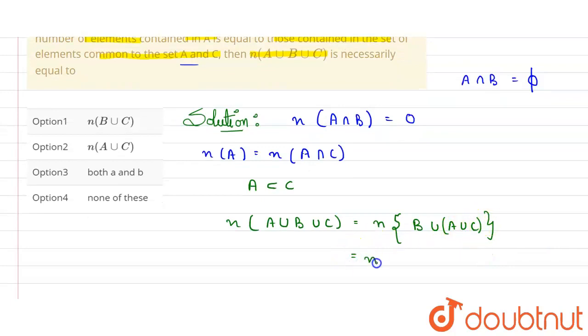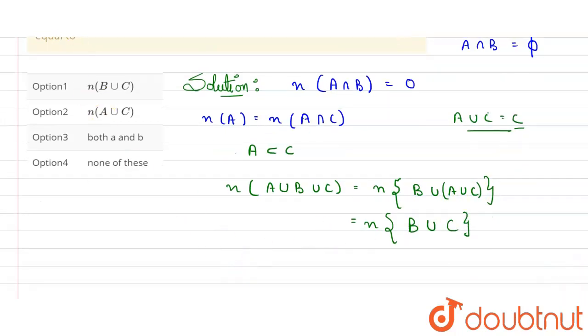So it will be equal to number of elements in A union C. If A is a subset of C, it means all the elements of A are contained in C. So what will be the union here? A union C will be equal to C itself, because all the elements of A are in C. And if I want to write the union, then it will be equivalent to C. So I will write B union, and in place of A union C, I can write C.